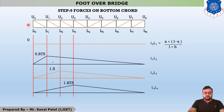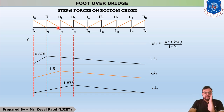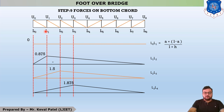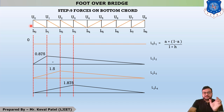Step nine is named forces on bottom chord. The bottom chord consists of junctions L0, L1, L2, L3, and L4. After L4 the foot over bridge is a symmetric figure. The first member is L0L1. From the top chord the next member takes maximum force — member U0U1, with U1 taking maximum load. Similarly, in the bottom chord member L0L1, the rear member L0 takes maximum force.